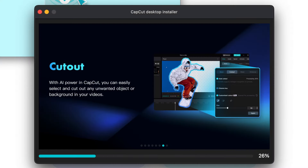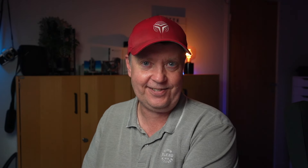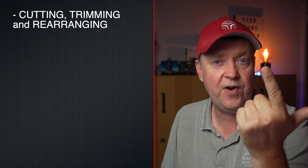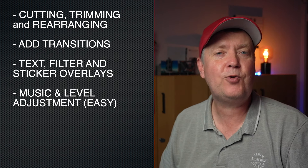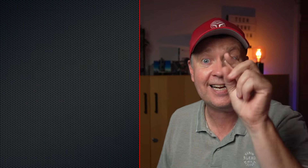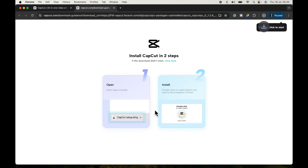The user interface is, from my point of view, very intuitive and user friendly. It allows you to do very simple as well as advanced tasks. Once you've learned basic editing skills with CapCut, it will be easy to transition to more advanced editors. The key features I'll be showing you in this video are: cutting, trimming, and rearranging clips; how to add transitions; how to use text and sticker overlays; how to add music and do audio level adjustments; speed ramps; and how to do auto captions with a single button click. You'll be able to get started right after watching this video.